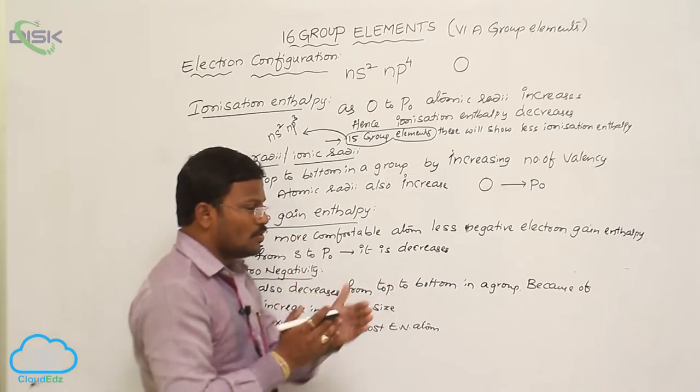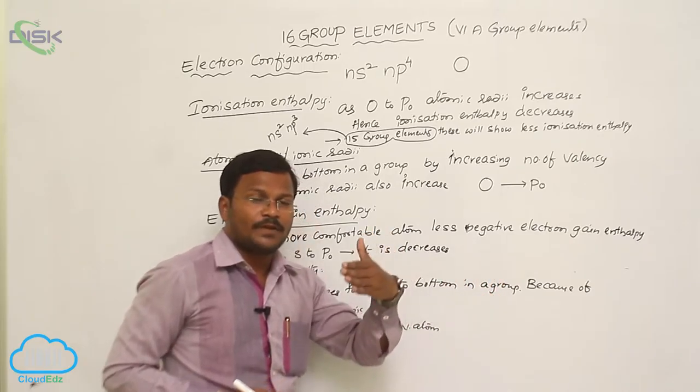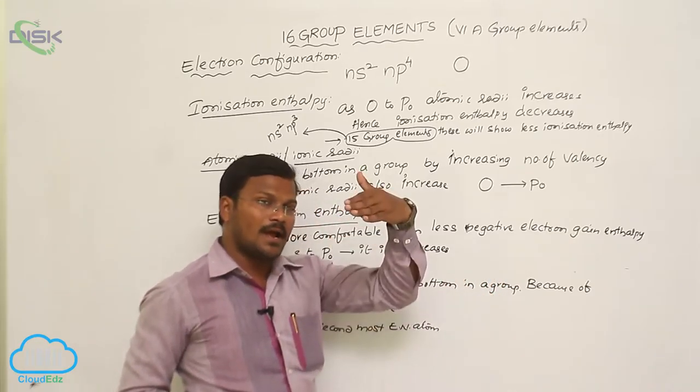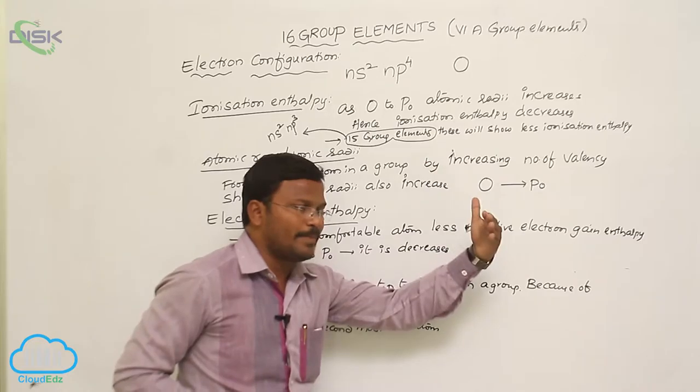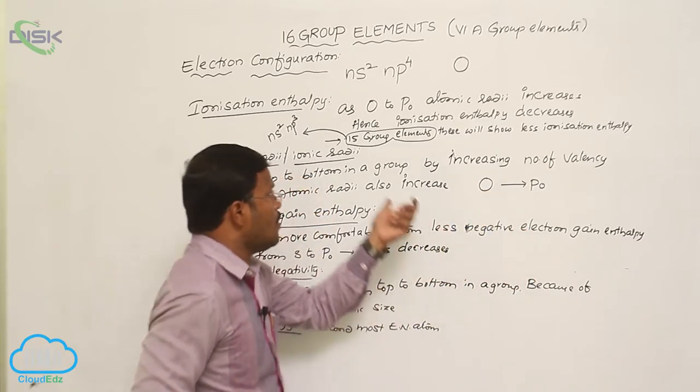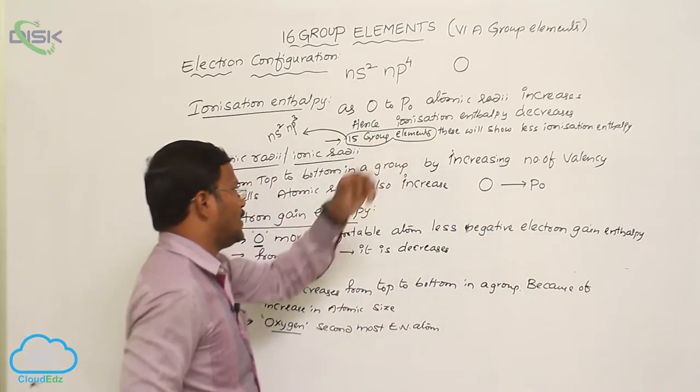When compared to 15th group elements and 16th group elements, 15th group elements will show high ionization enthalpy values when compared to 16th group elements because of more stable electron configuration in 15th group elements.